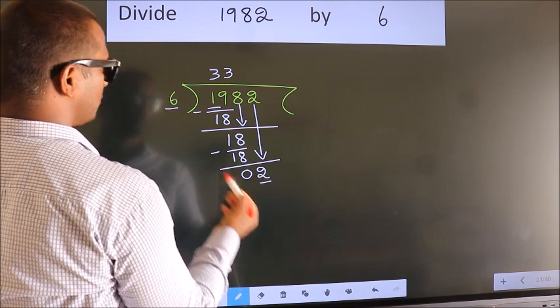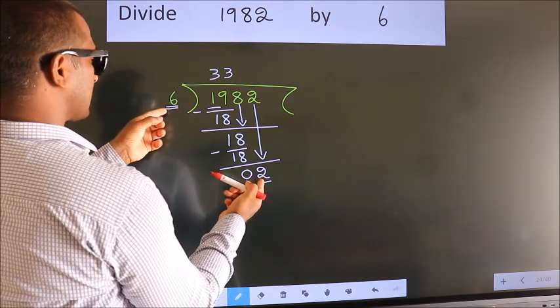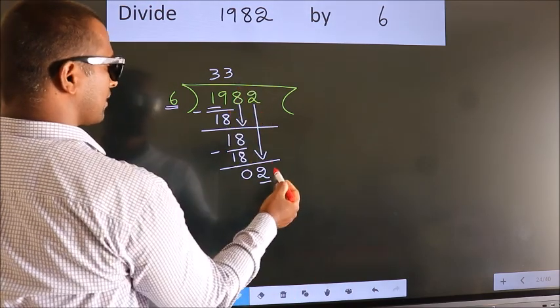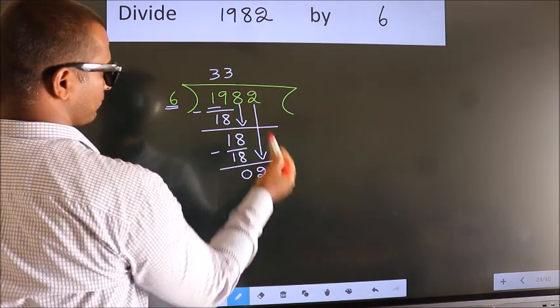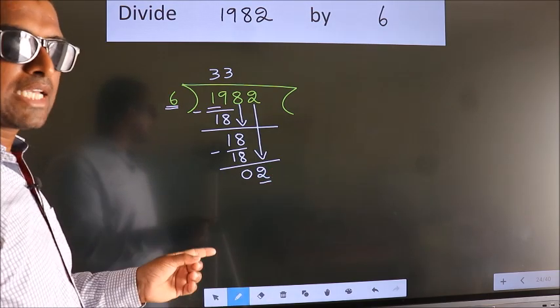And the mistake is this. Here we have 2. Here 6. 2 smaller than 6. So what many do is they directly put dot, take 0. Which is wrong.